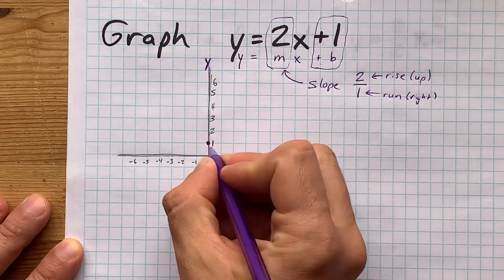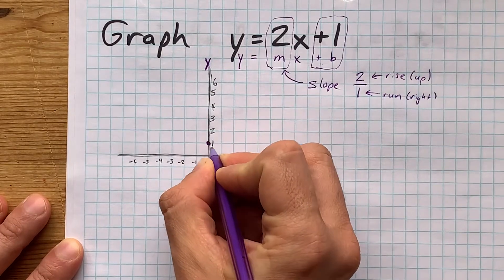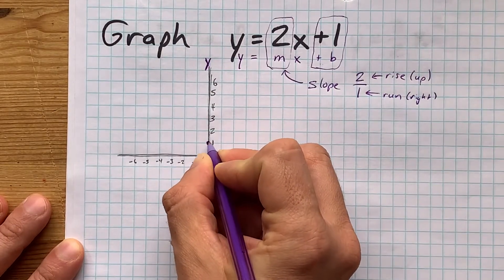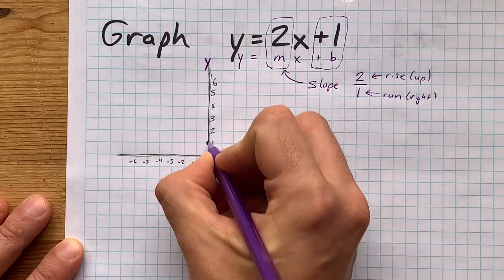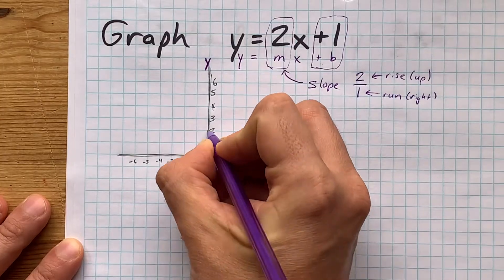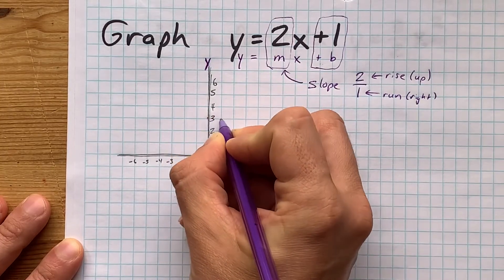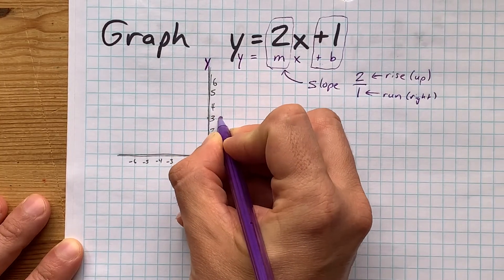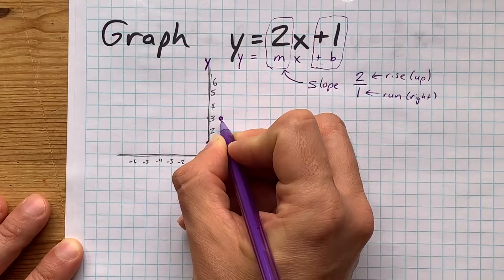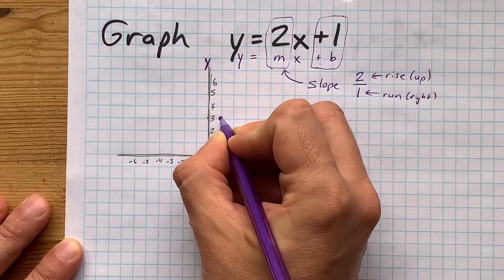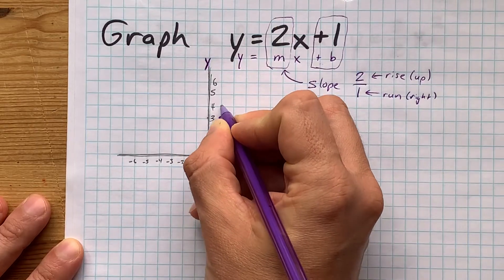So from this y-intercept that we already plotted, we are going to go up 2 points and to the right 1. Then from that point we do the same thing — up 2, right 1.